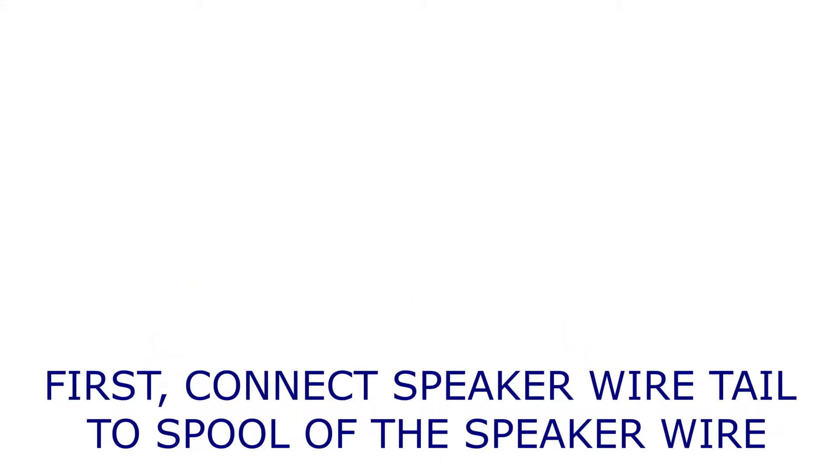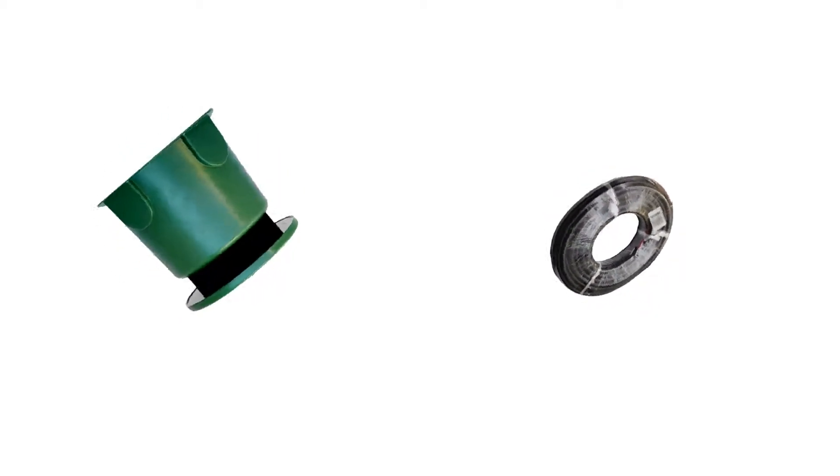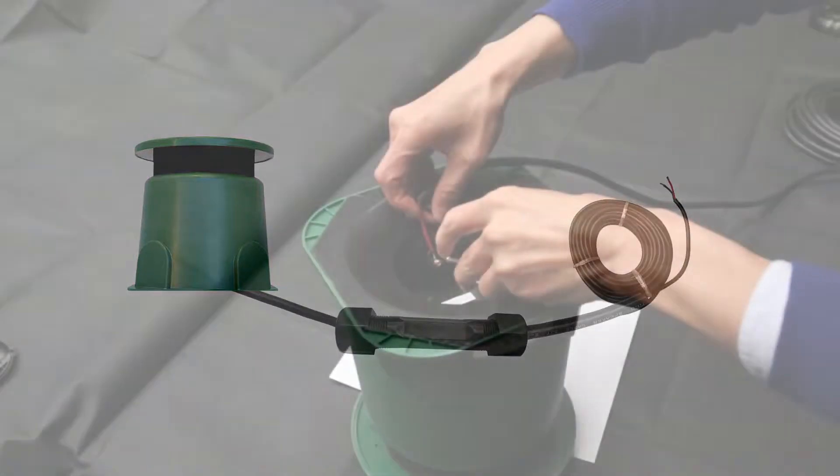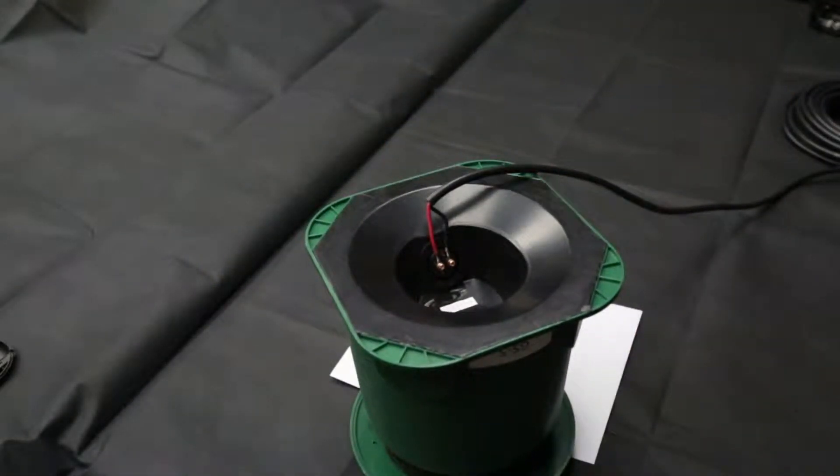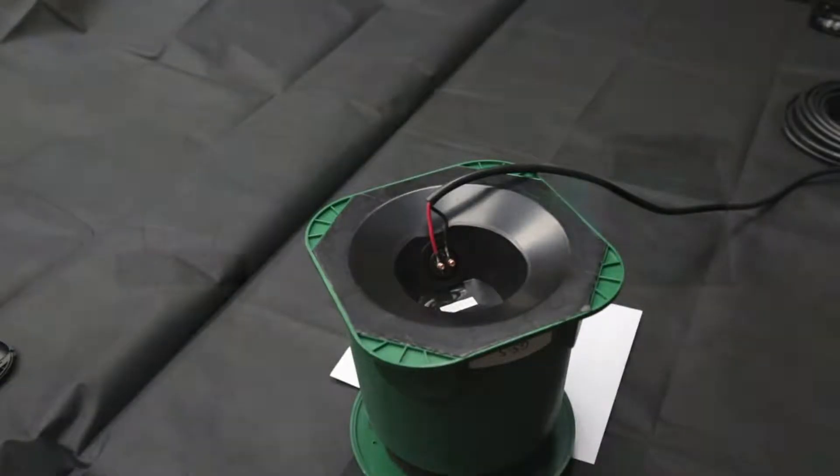In the first step, we want to connect the speaker wire tail to the spool of speaker wire you have purchased. The first step can be skipped entirely if the speaker only has a wire terminal. In this case, you can connect the speaker wire directly into the terminal.